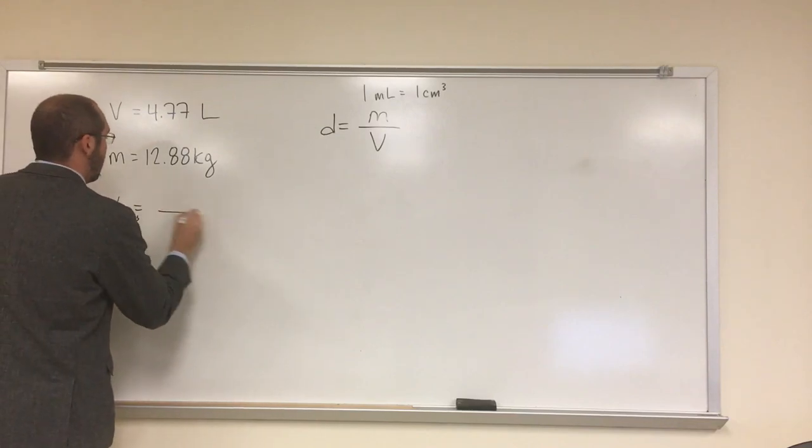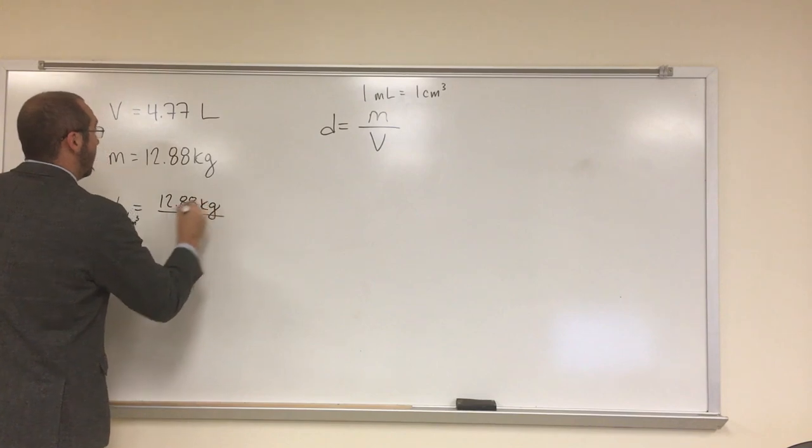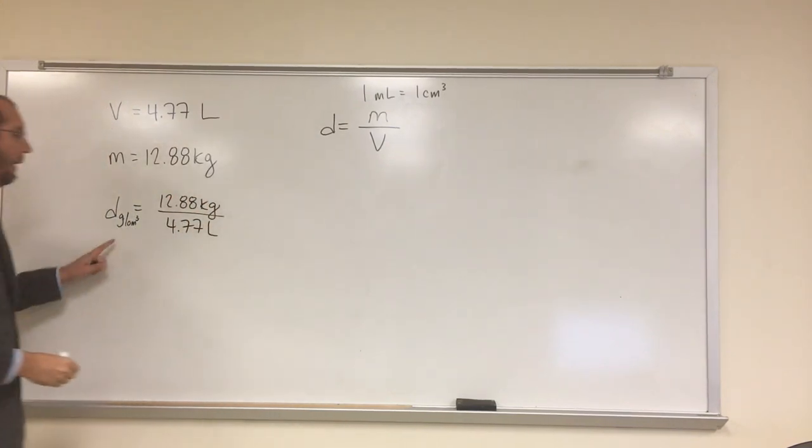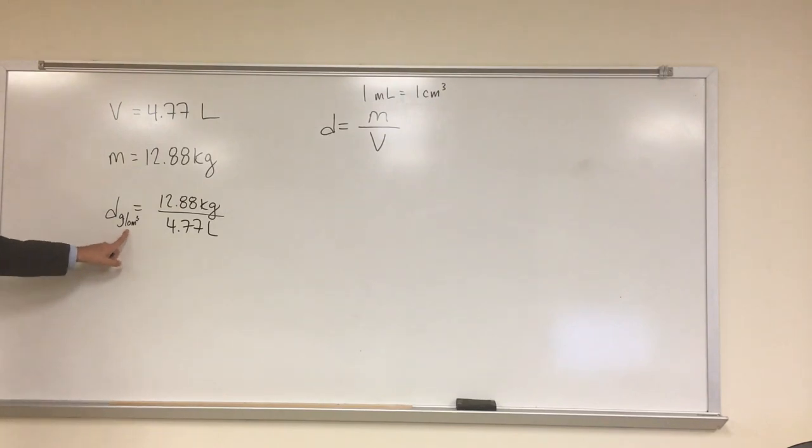But if we put those in, our density would be in the wrong units. Specifically, it would be in kilograms per liter, right? But we want it in grams per cubic centimeter.